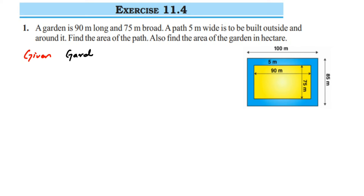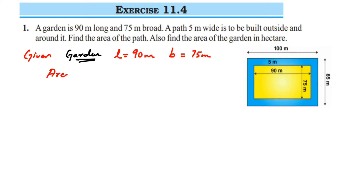In the garden, they have given the length as 90 meters and the breadth as 75 meters. We have to find the area of the garden.